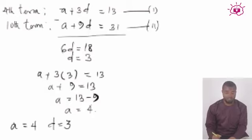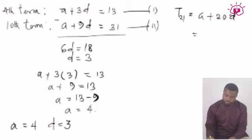So now we can find our 21st term. The formula for our 21st term is a plus 20d. Our first term is 4 plus 20 times our common difference 3, so that will give us 4 plus 60, and that will be 64.